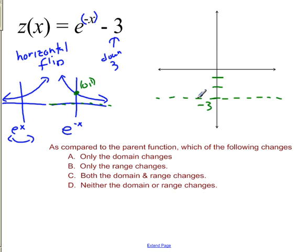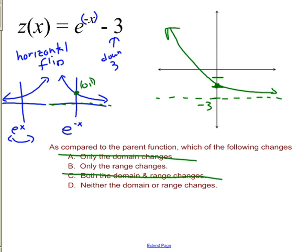The point that was at (0, 1) also goes down three units. In general, unless we do a vertical stretch or shrink, the asymptote and this point of interest will always be one unit apart. Domain of e to the x is negative infinity to infinity — domain cannot change. The range was zero to infinity; now it's negative three to infinity. That changed.